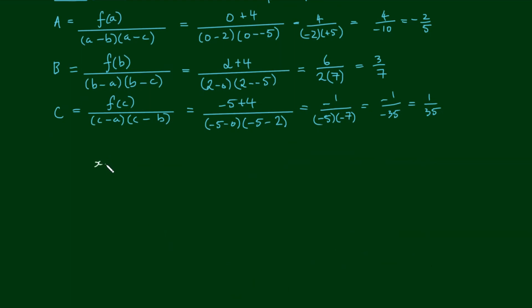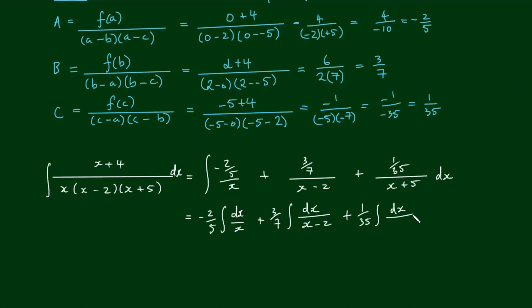Our rational function x plus 4 divided by x times x minus 2 times x plus 5 has been decomposed to negative two-fifths on x plus three-sevenths on x minus 2 plus one thirty-fifth on x plus 5. The integral of the left-hand side equals the integral of the right-hand side, which is negative two-fifths by the integral of dx on x, plus three-sevenths by the integral of dx over x minus 2, plus one thirty-fifth by the integral of dx on x plus 5.